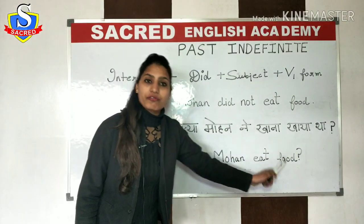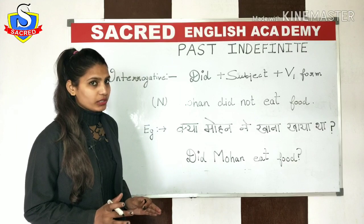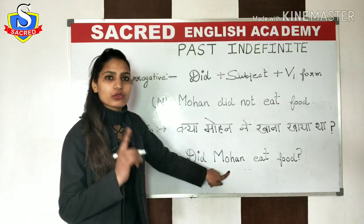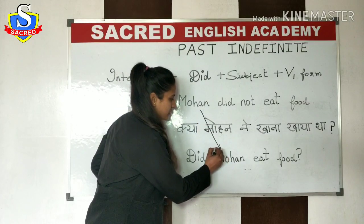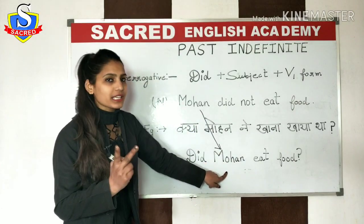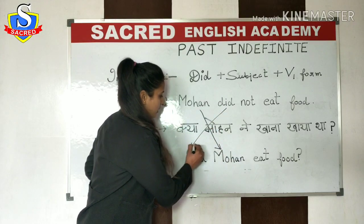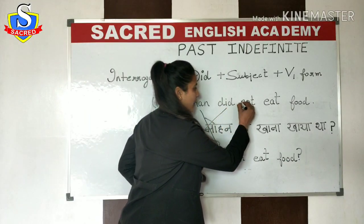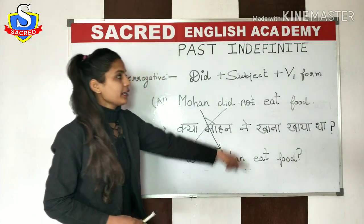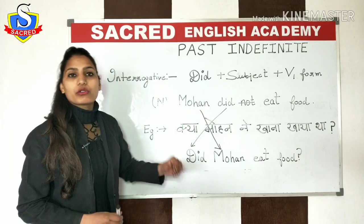Repeating: 'Did Mohan eat food?' Aap dekhte hain ki negative sentence se interrogative kaise banta hai — aapko zyada confused hone ki zaroorat nahi hai. Jo pehle number pe subject laga hai, usko interrogative mein second number pe le jana hai. Similarly, 'did' jo negative mein second number pe tha, usko first number pe le jana hai, and you don't have to use 'not' here. 'Did Mohan eat food?' — make sure ki aap rule ko saath leke chalen, otherwise mistakes zyada hongi. This is all about the interrogative sentence.